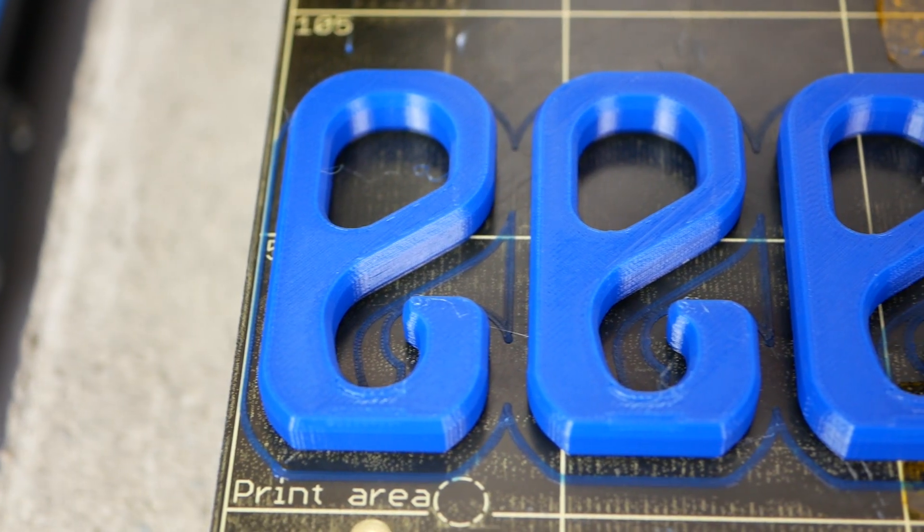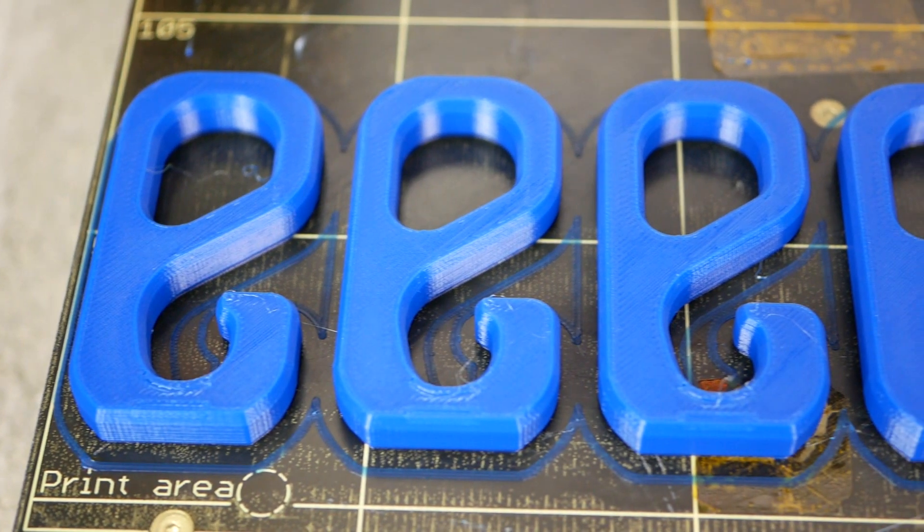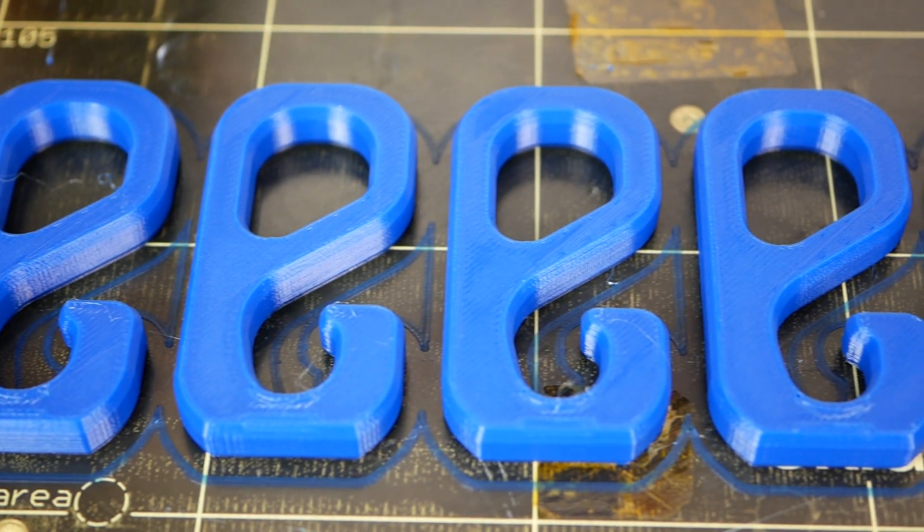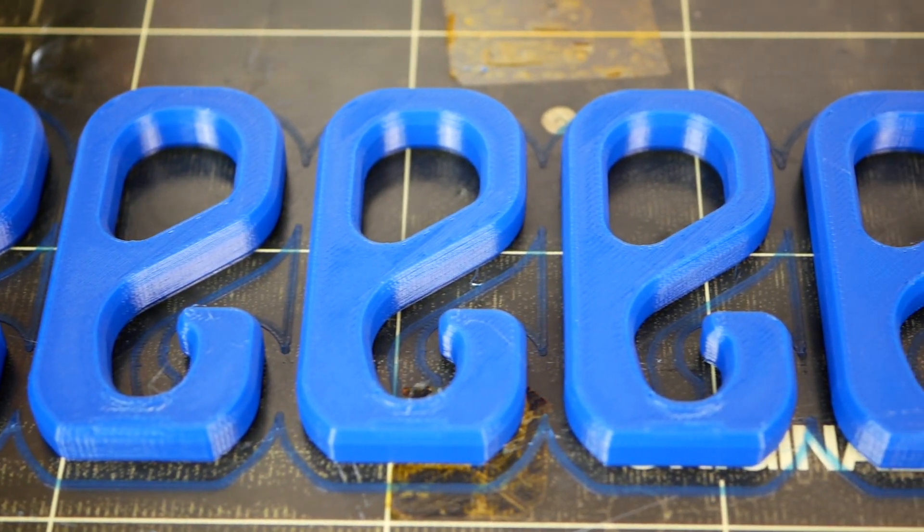For parts that need to be strong I usually don't go above 4 perimeters and 50% infill. That is a good compromise between material usage and strength.